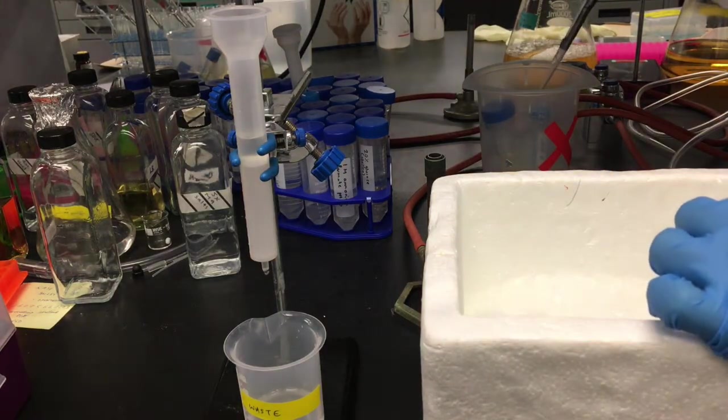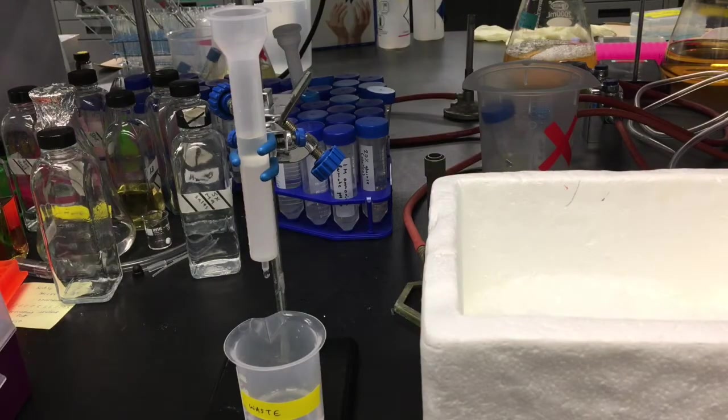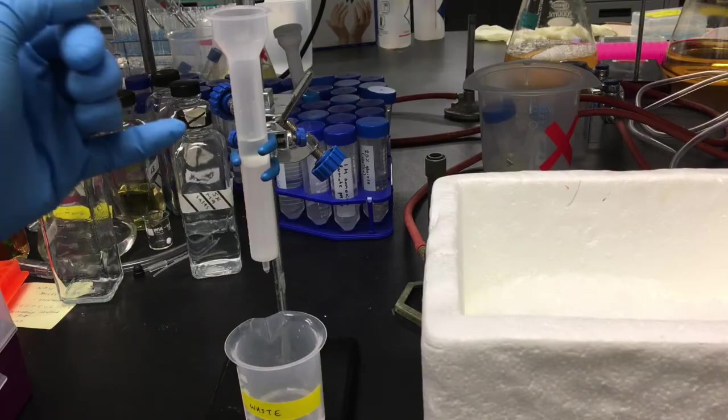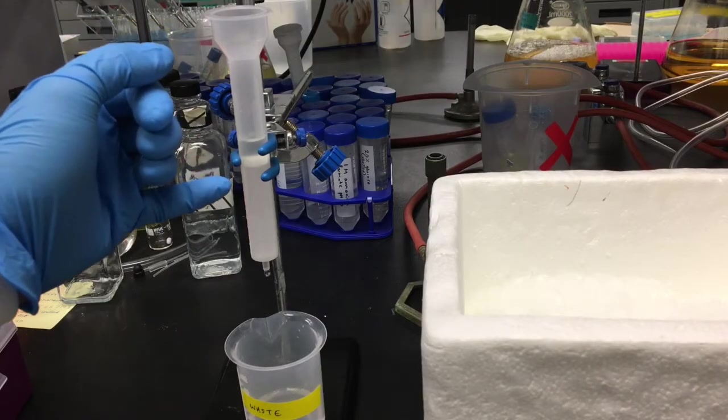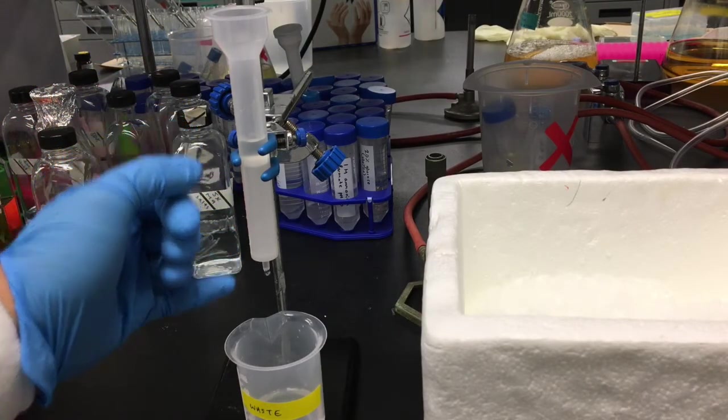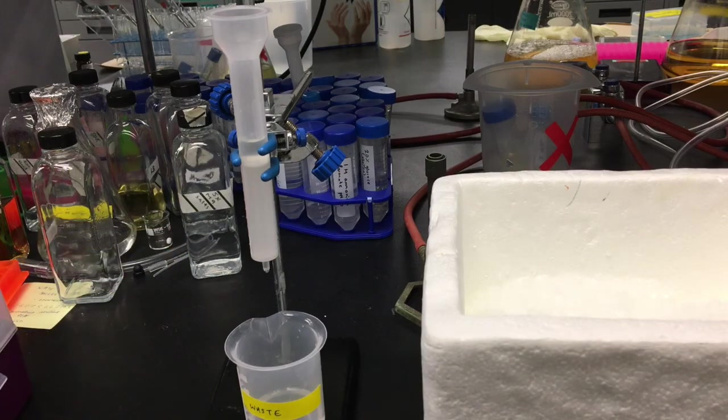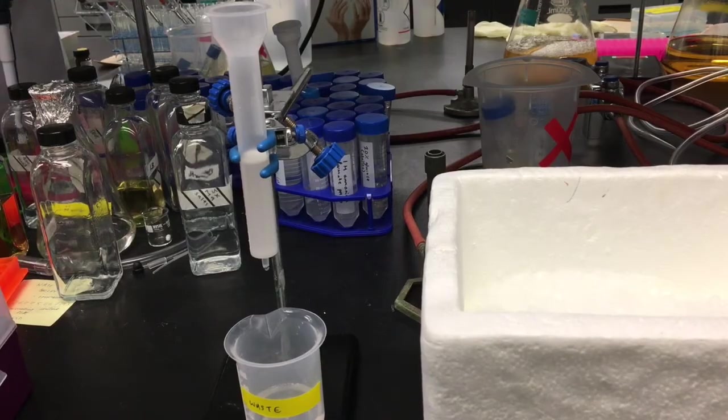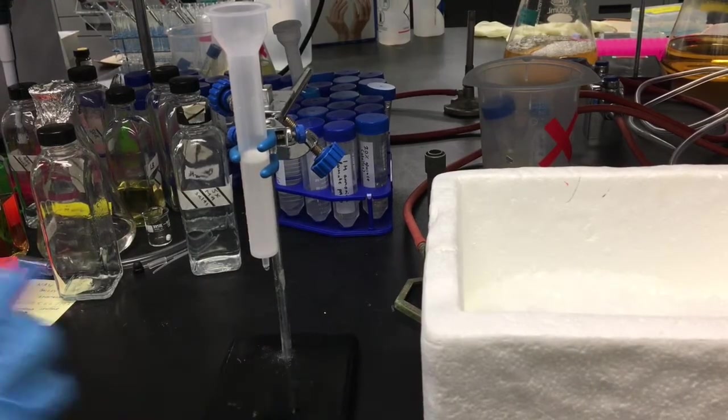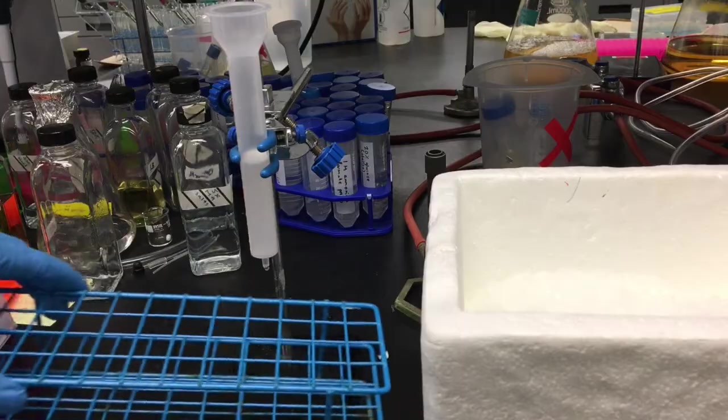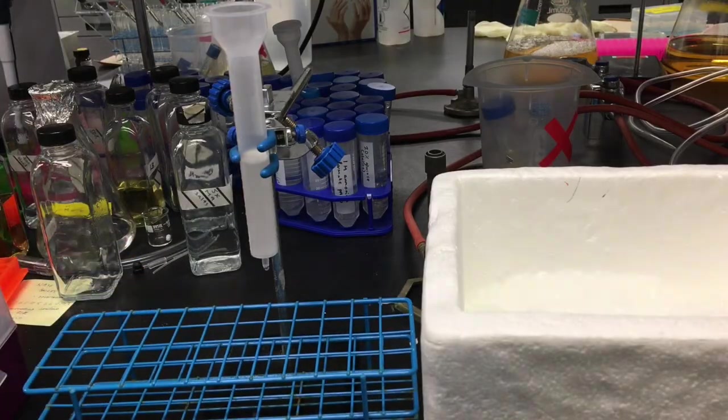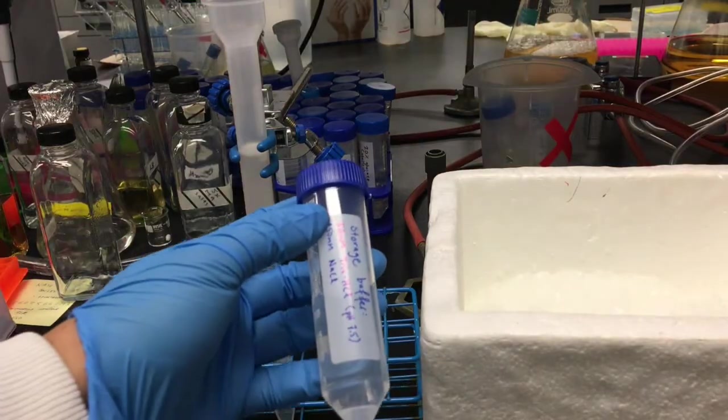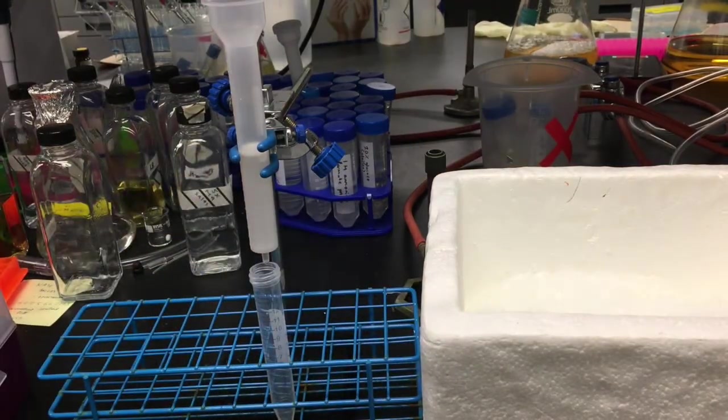The gel resin in the column contains many small pores and channels. Salts are small enough to enter the pores, but proteins are not, so they flow around the beads. The result is that proteins will elute from the column first, while the salts and buffers from the applied sample are retained on the column longer. This way, proteins can be separated from the sample buffer and eluted with the buffer in which the column was equilibrated. Use the column according to the manufacturer's protocol to get your protein into your buffer of choice.